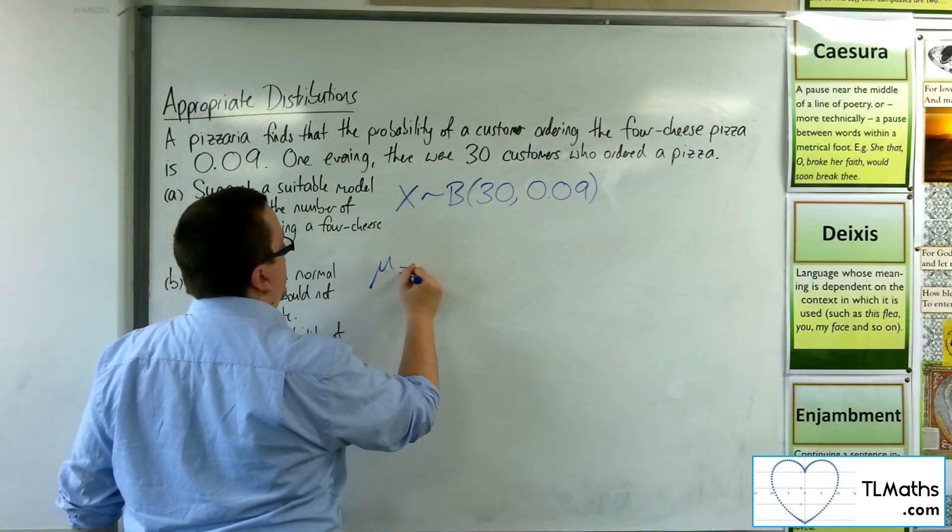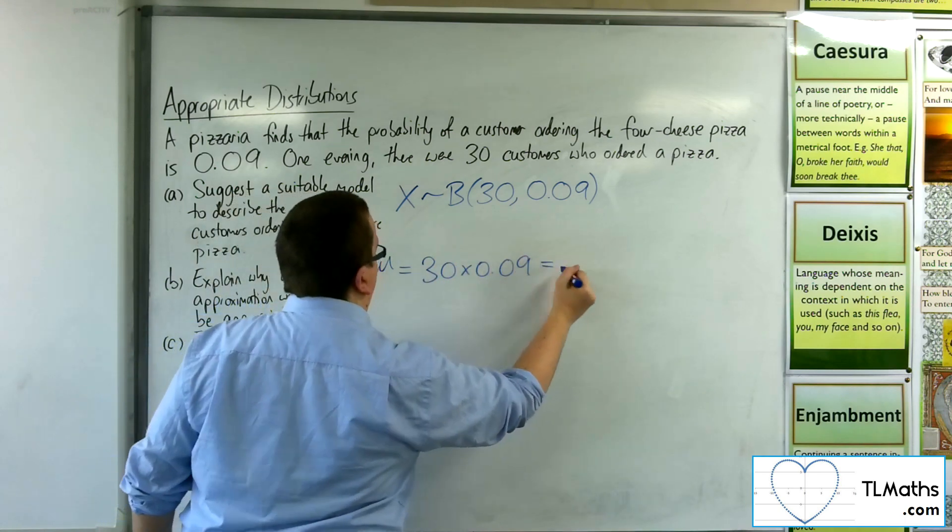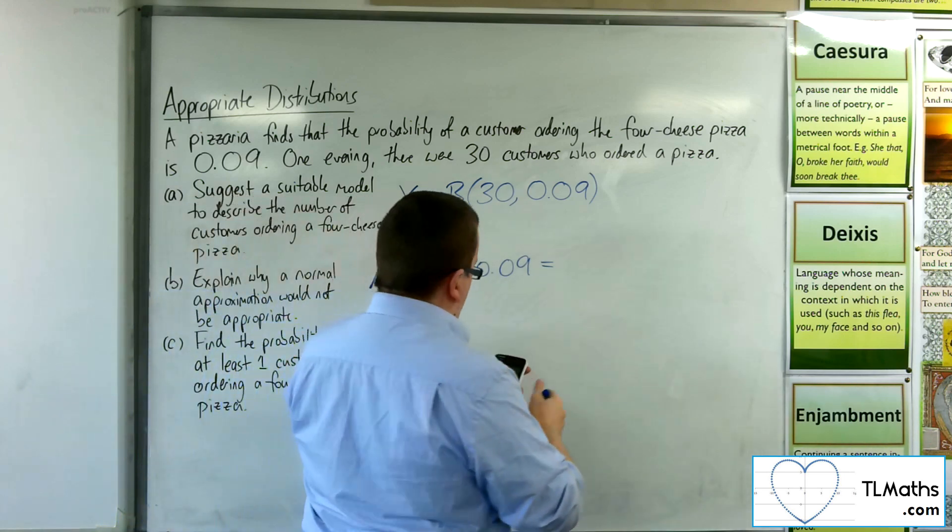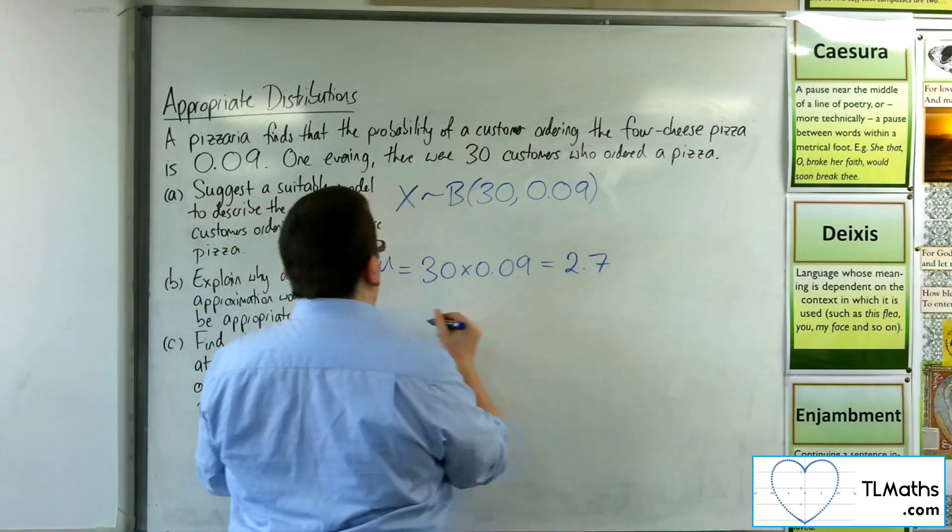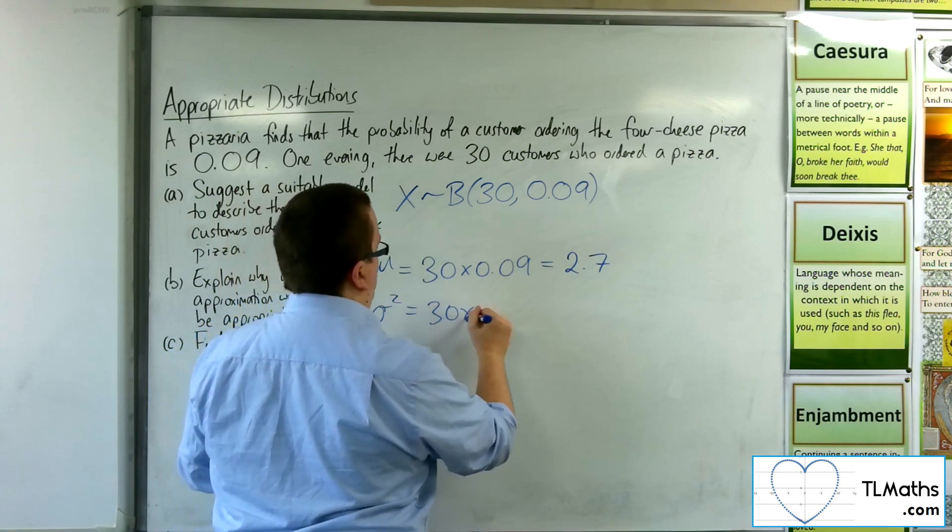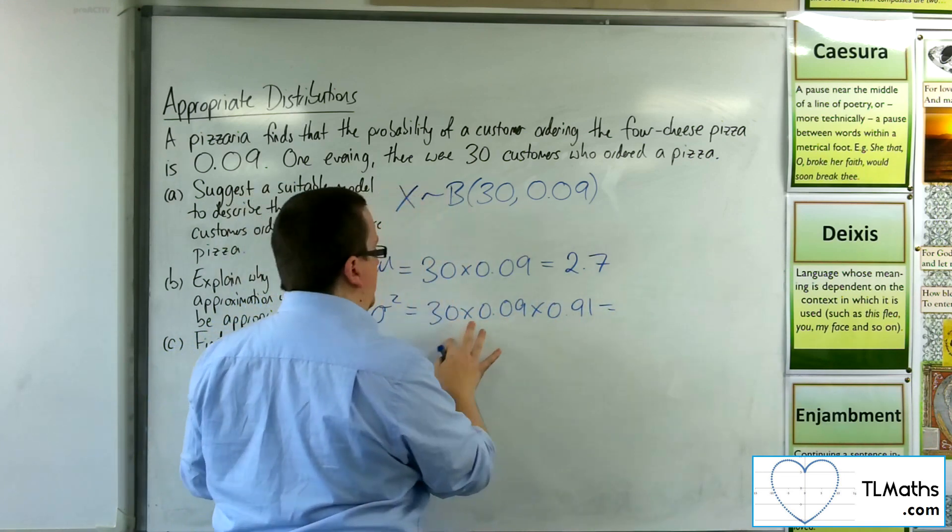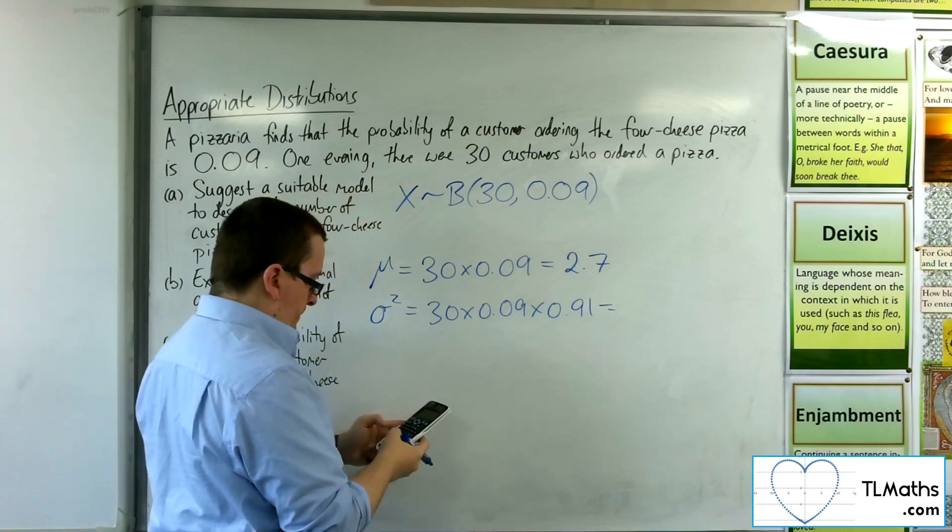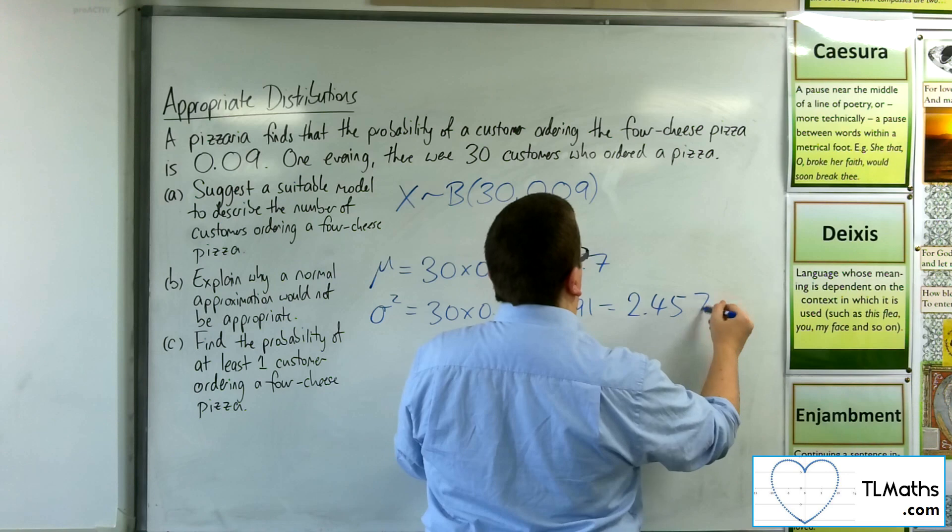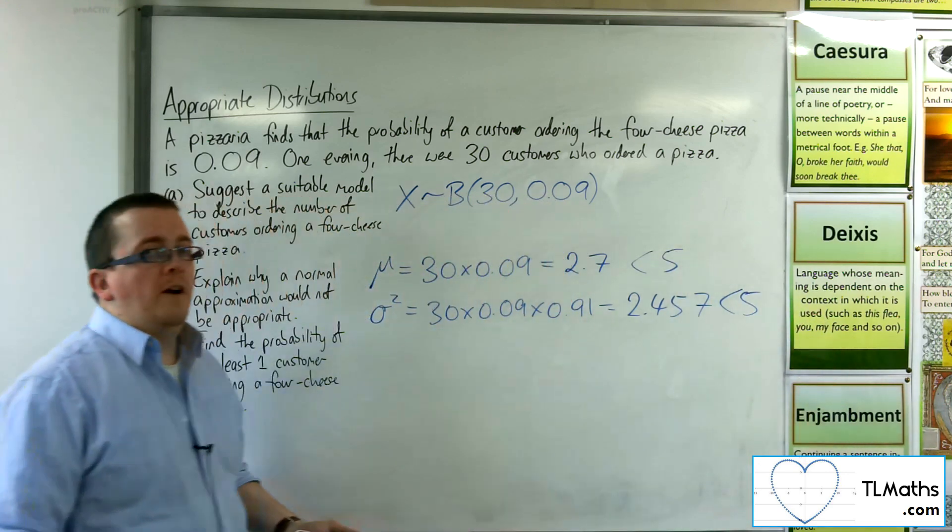So the mean would be 30 times 0.09. So 30 times 0.09 gets me 2.7. And the variance is 30 times 0.09 times 0.91. So n times p times 1 minus p. And that gets me 2.457.